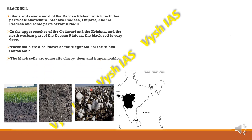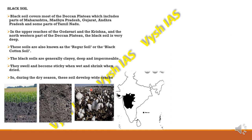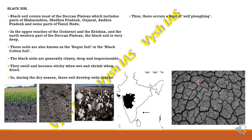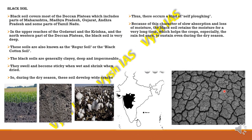Black soils are generally clay, deep, and impermeable. They swell up and become sticky when wet and shrink when dried, forming cracks in the dry season — a kind of self-ploughing. Seeds can be placed in these cracks, and when rainfall occurs, crops start growing again. Because of slow absorption and loss of moisture, black soil retains moisture for a very long time, helping crops sustain even in dry seasons.